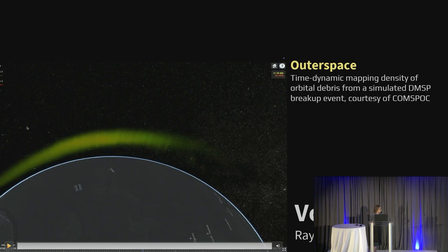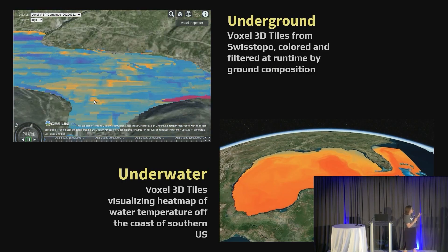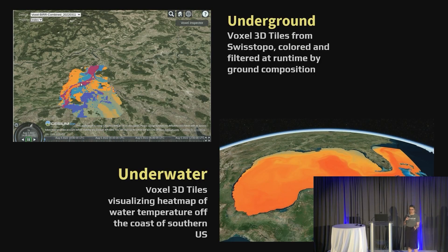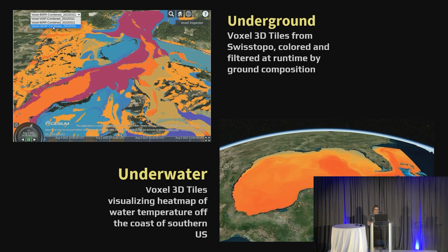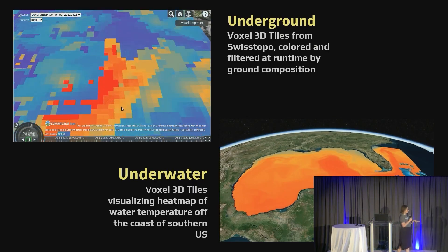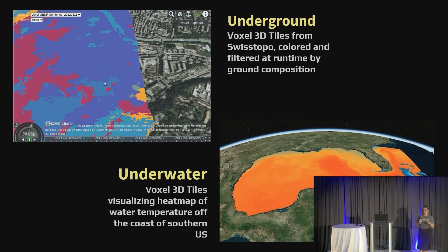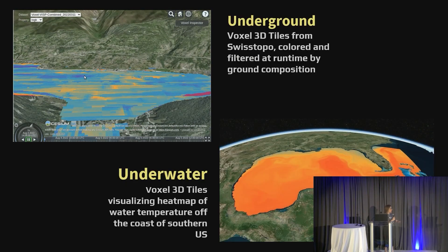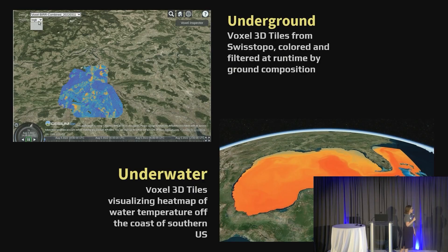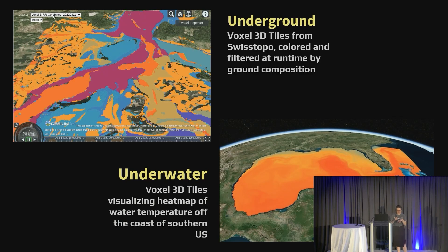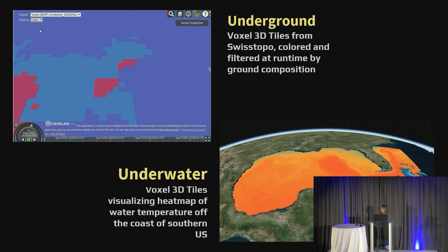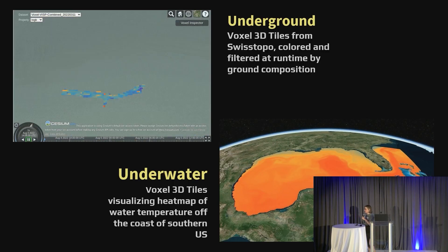When we are rendering voxels, we are using a draft extension to 3D tiles. Because we are using a rendering technique involving raymarching, we can do a lot of transparency effects and style at runtime. Here are a few more examples of using voxels in different contexts. The first is an underground dataset from a company called SwissTopo — they work on a digital twin of the entirety of Switzerland and deal with ground composition data, classifying it into different buckets. At the bottom we have an underwater use case, using voxels to represent ocean temperature off the coast of the southern U.S.